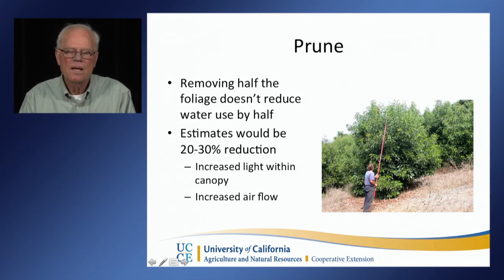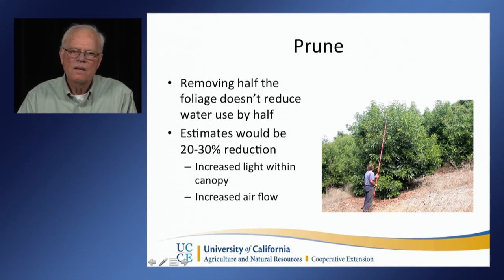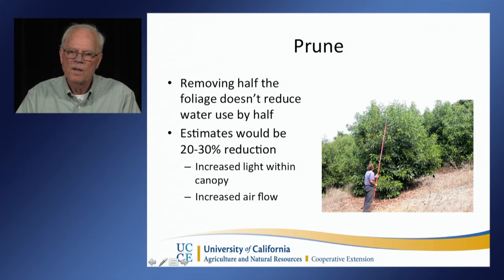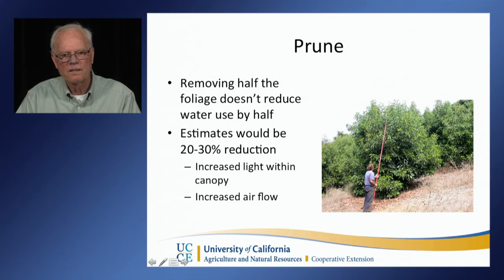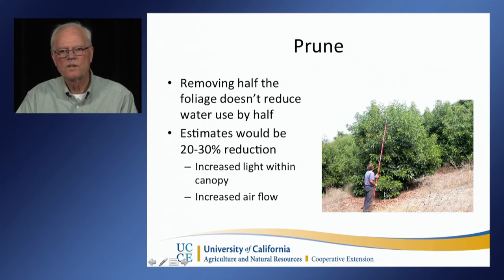Pruning can also be done. However, removing half the foliage does not reduce water use by half — you have to go below 65% ground coverage from shading. But if you reduce the size of the tree from a full-grown 30-foot tree down to 10 to 15 feet, you can easily reduce water application by 20 to 30%. This also brings more light into the canopy, tends to increase flowering and fruit set, and increases airflow, which reduces the amount of fungal damage to fruit.